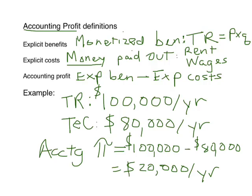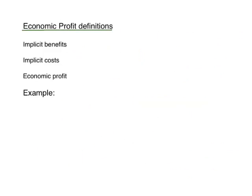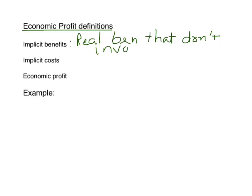Well, maybe let's think again. Let's talk about economic profit, which is the profit concept we'll use throughout our study of economics. It's different from accounting profit. When you read about profits in the business pages of the newspaper, they're typically reporting accounting profits. But when you look at how firms respond to that news, you see that firms are making decisions based on economic profit. So we need to define some things — one is implicit benefits. These are real benefits that don't involve a money transfer.